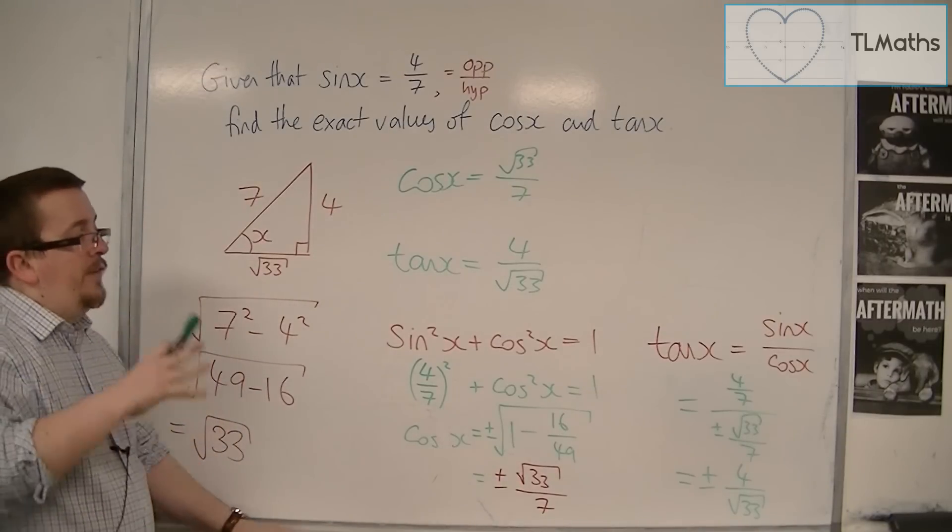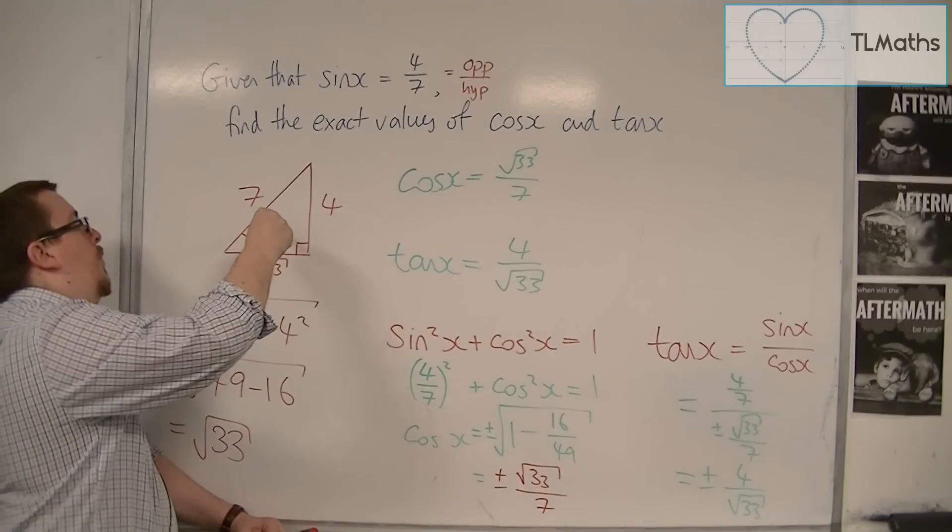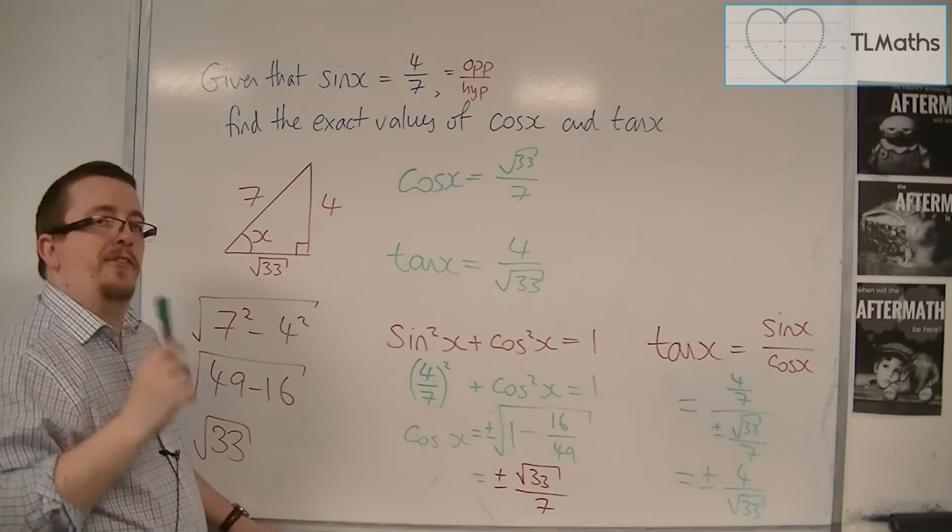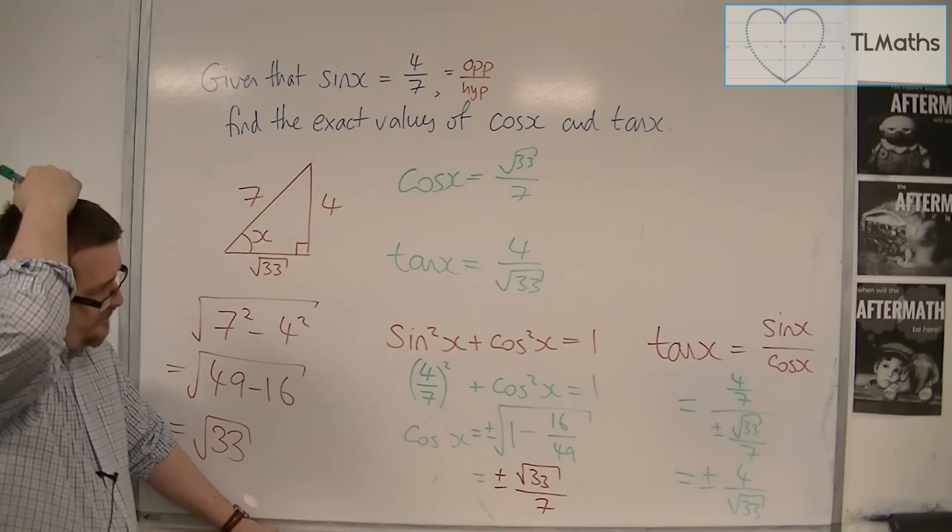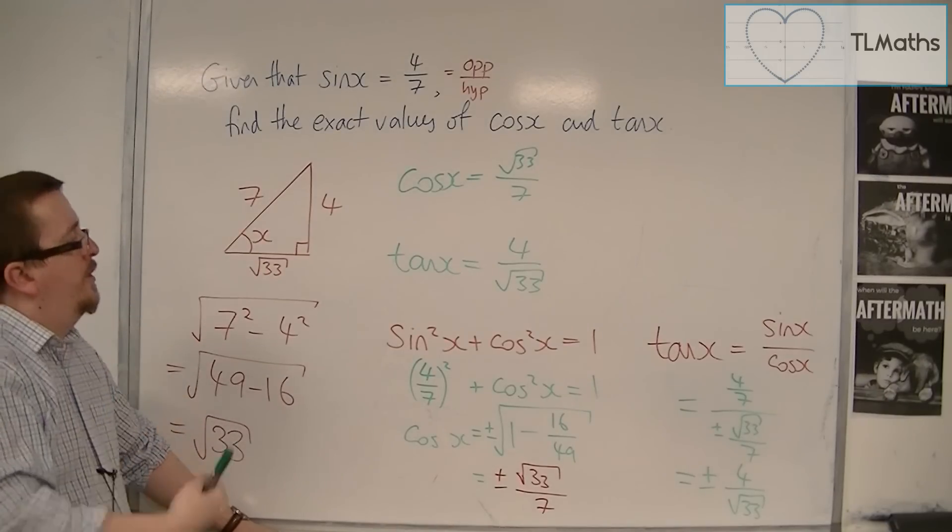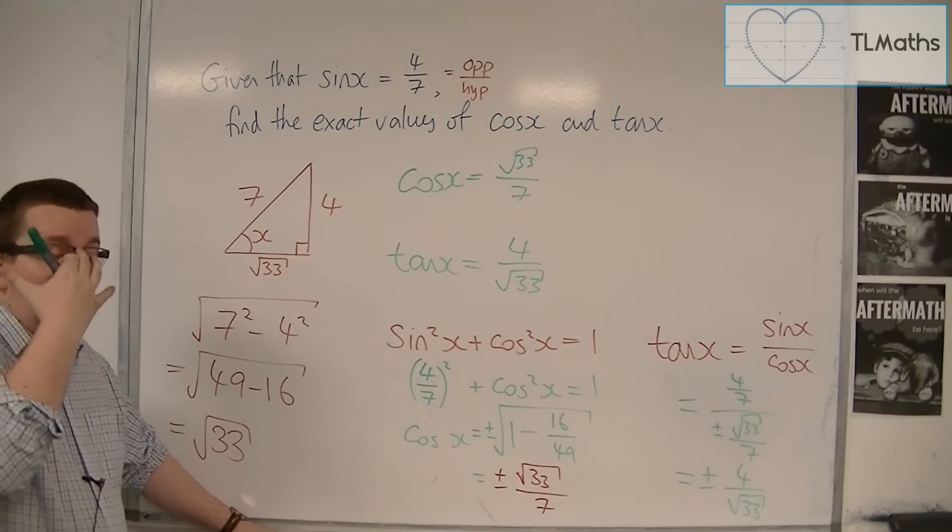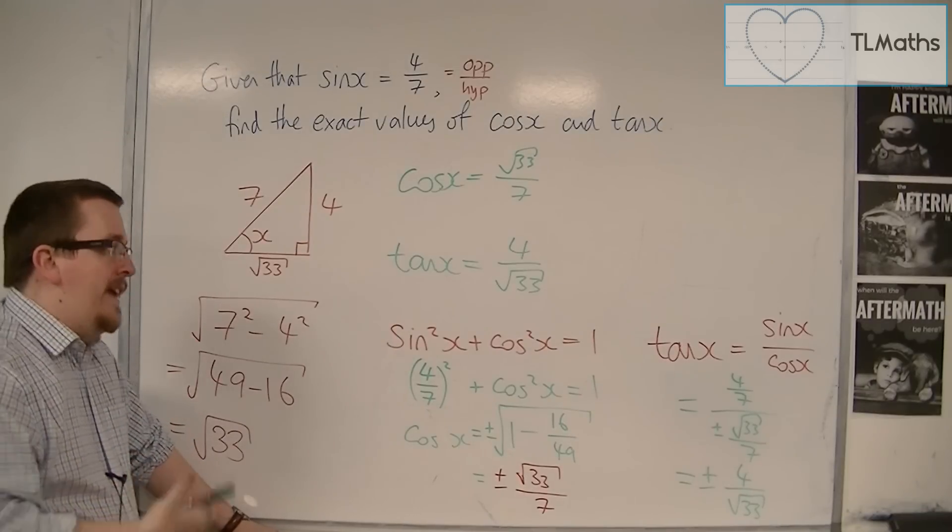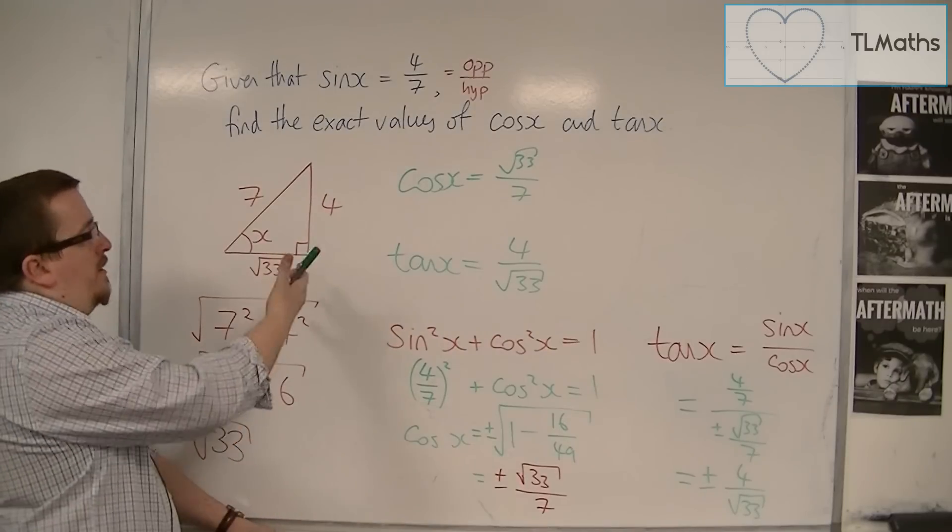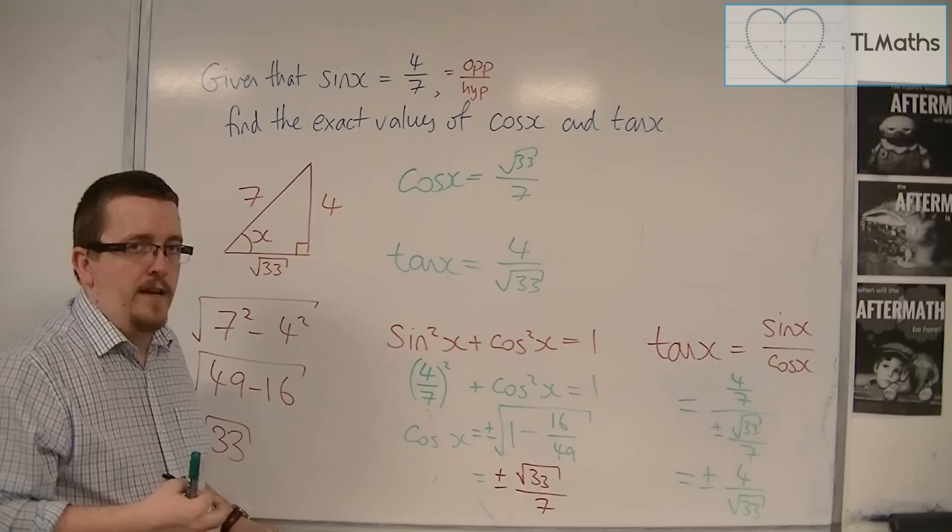Now, the reason why this is happening is down to the fact of what that angle is, and it is dependent on the size of that angle. So, we might not be looking at an angle that is acute, for example, or obtuse. It could be a reflex angle. And in that case, we can't really draw a triangle that includes it.